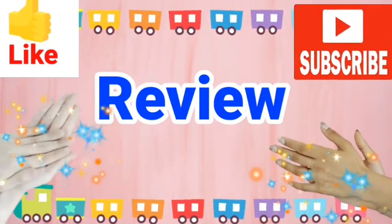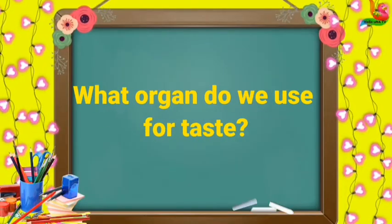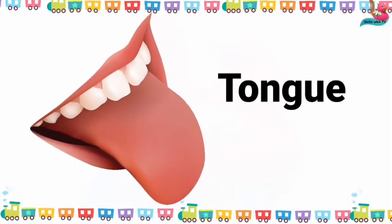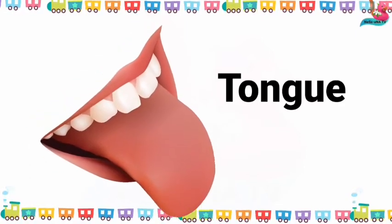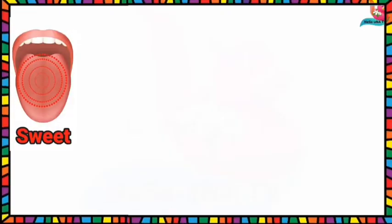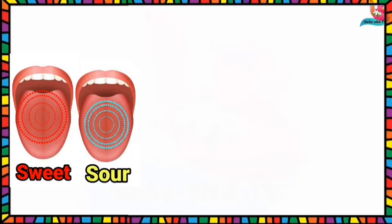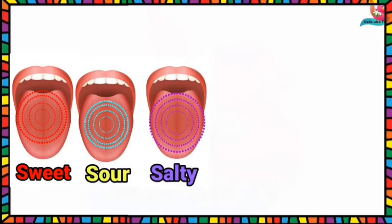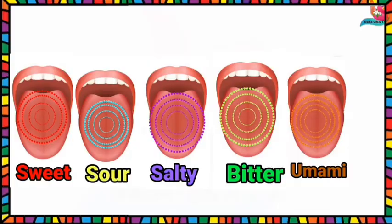Let's take it again. What organ do we use for taste? Tongue. We taste with our tongue. What can we taste with our tongue? Sweet, sour, salty, bitter, umami.